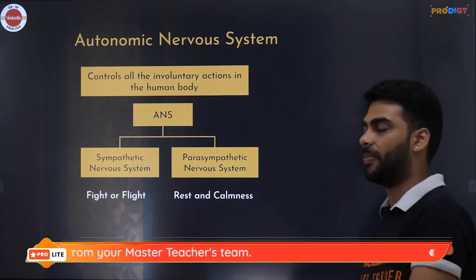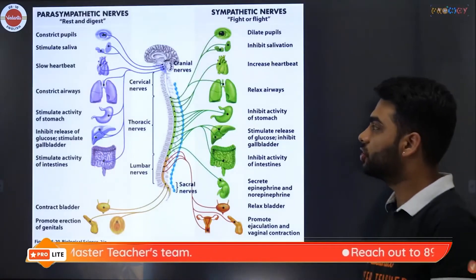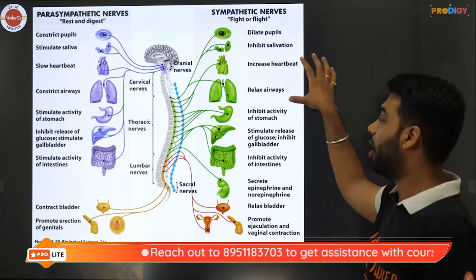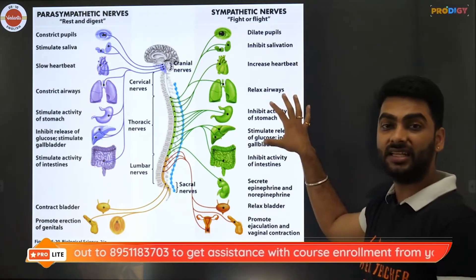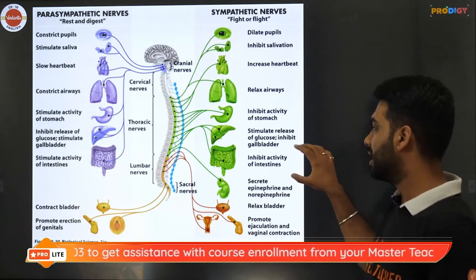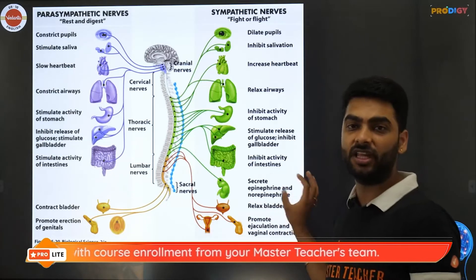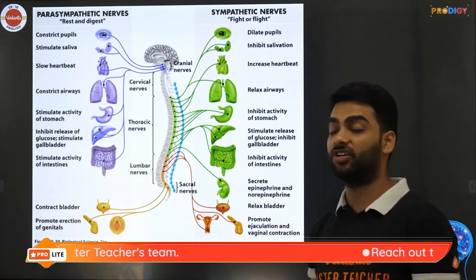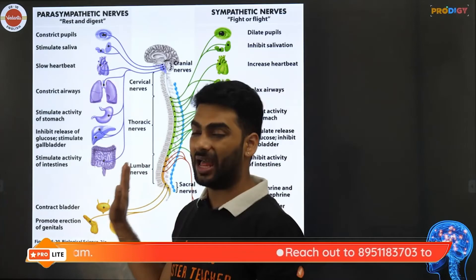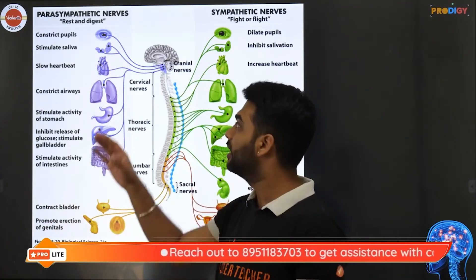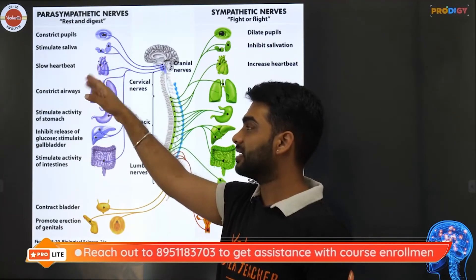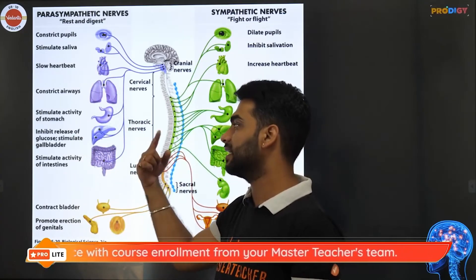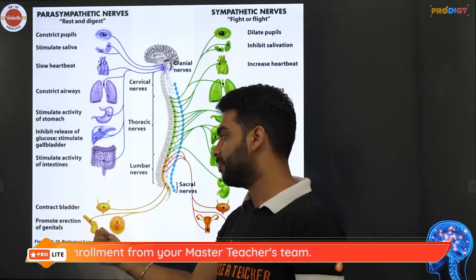When your sympathetic nervous system is activated: your pupils dilate, your mouth turns dry, your heartbeat increases, your airway relaxes, stomach activity stops, it stimulates glucose release, inhibits intestinal activity, and secretes epinephrine and norepinephrine — basically adrenaline and noradrenaline — and it relaxes the bladder. When the parasympathetic nervous system activates, the pupils constrict, saliva starts secreting, heartbeat slows down, airways constrict, stomach and intestinal activity resumes, the bladder contracts, and the body returns to a relaxed state.